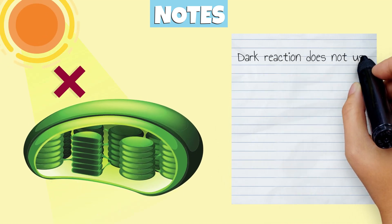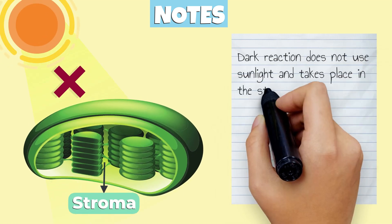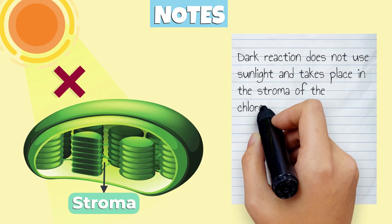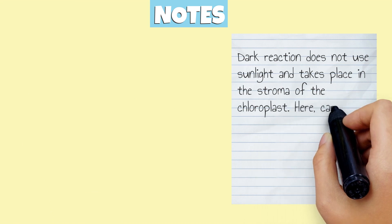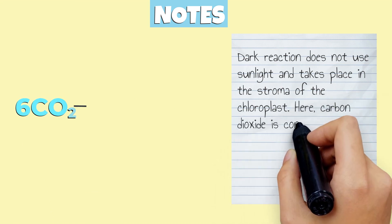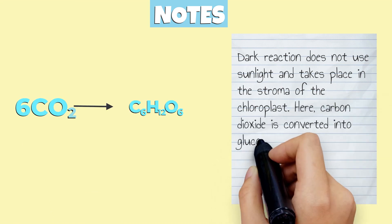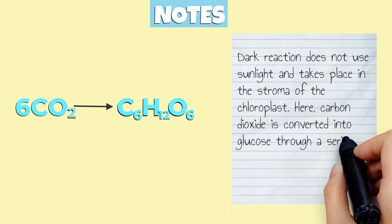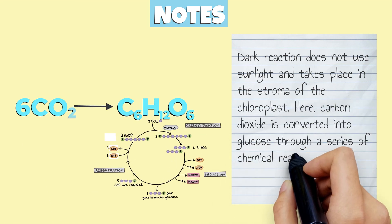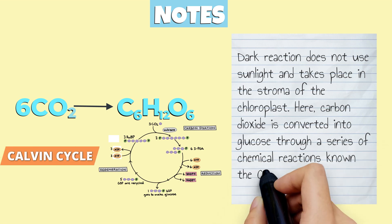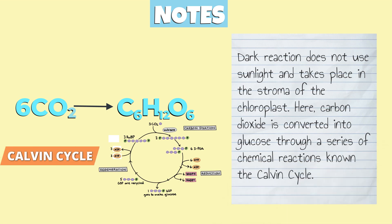Dark reaction does not use sunlight and takes place in the stroma of the chloroplast. Here, carbon dioxide is converted into glucose through a series of chemical reactions called the Calvin Cycle.